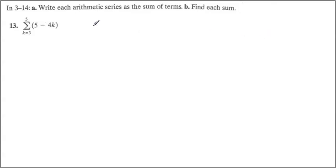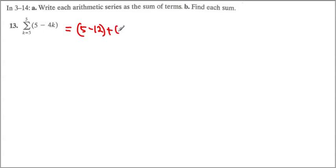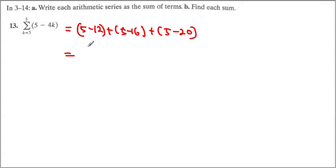Once you plug in 3, we get 5 minus 12 as the first term. The second term with 4 gives 5 minus 16, and the next is 5 minus 20. When you add the 5s, we get 15, and the sum of the other parts becomes 48. So 15 minus 48 becomes negative 33.